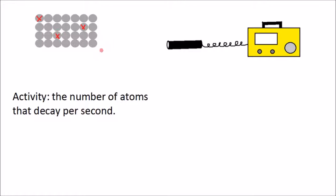But what we can do is we can measure the activity of the sample as a whole. And the activity of an isotope is the number of atoms that decay per second and radiation can be detected using a Geiger tube and counter.